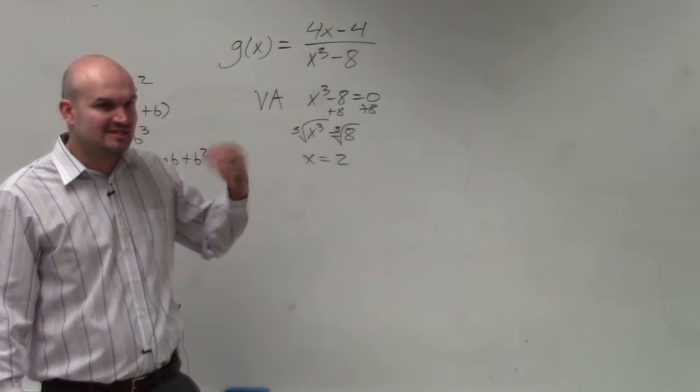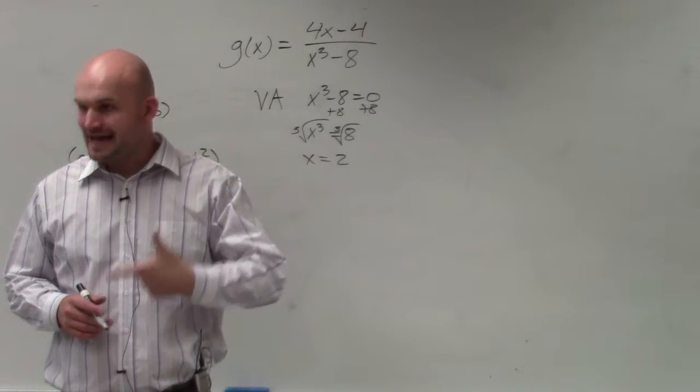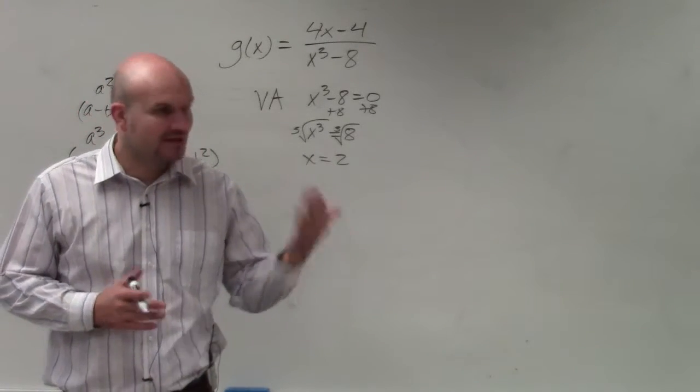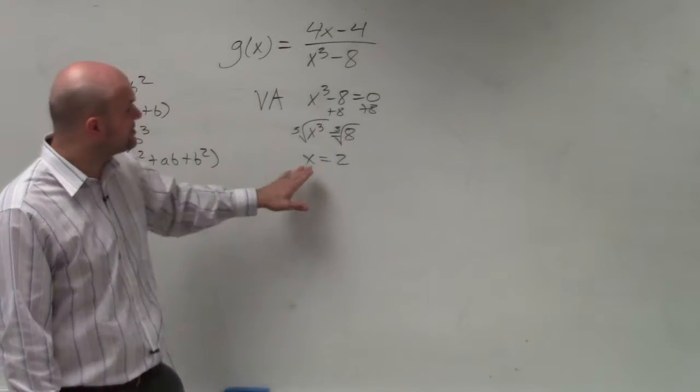However, we have to remember discontinuities come in two forms: holes and asymptotes. Holes are removable, asymptotes are not. So we have to make sure this is non-removable.